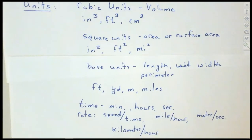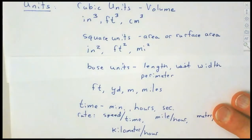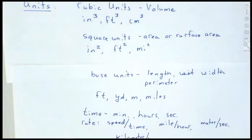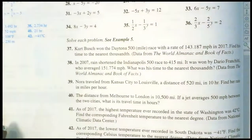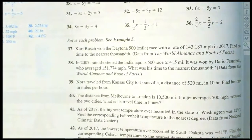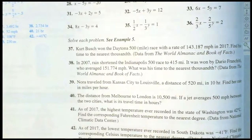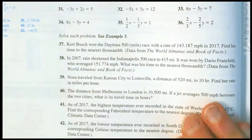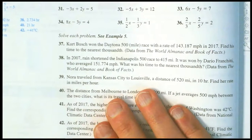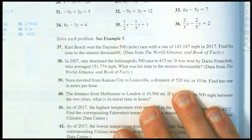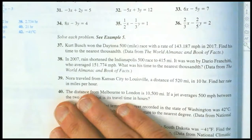Let's look at question 39 on page 74. Whenever we look at an application, we read it, identify what we're doing, find the correct formula, calculate it through, and then label it at the end. The problem: Nora traveled from Kansas City to Louisville, a distance of 520 miles in 10 hours. Find her rate in miles per hour.